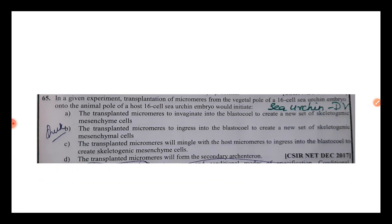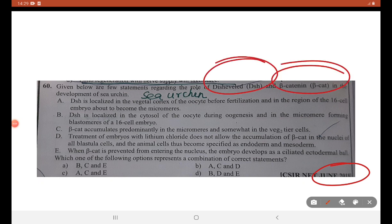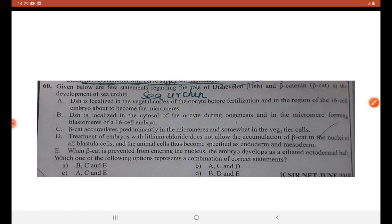Next, from June 2018: given below are a few statements regarding the role of disheveled and beta-catenin in the development of sea urchin. We need to have basic knowledge about the cleavage pattern and the micromeres and macromeres present in the sea urchin.